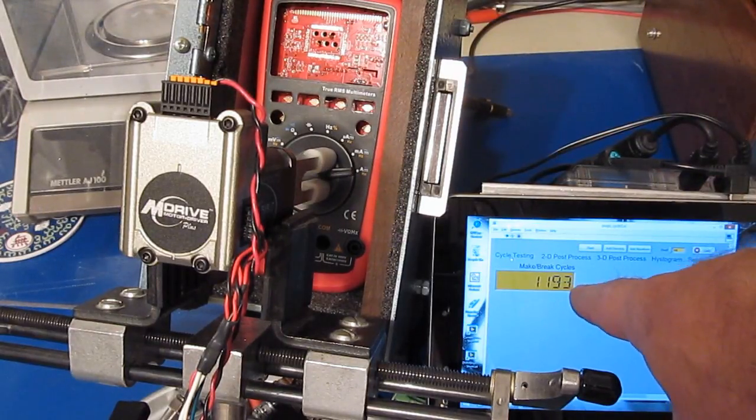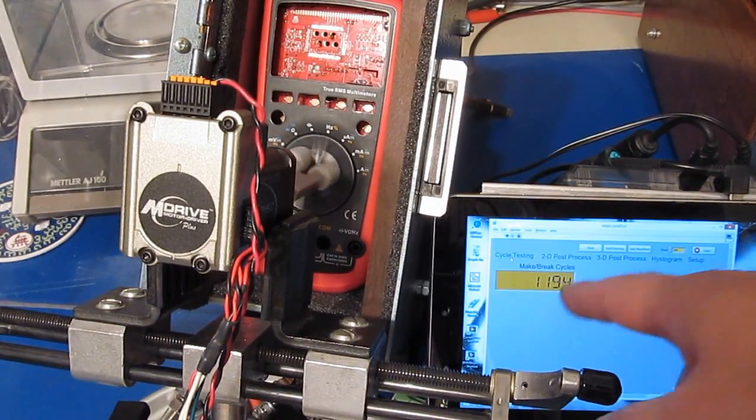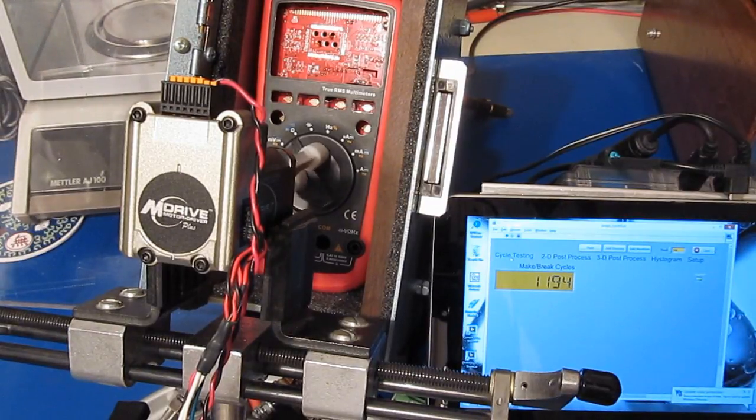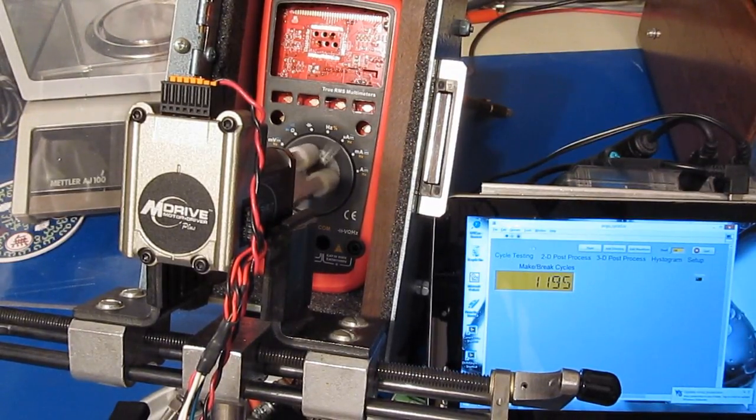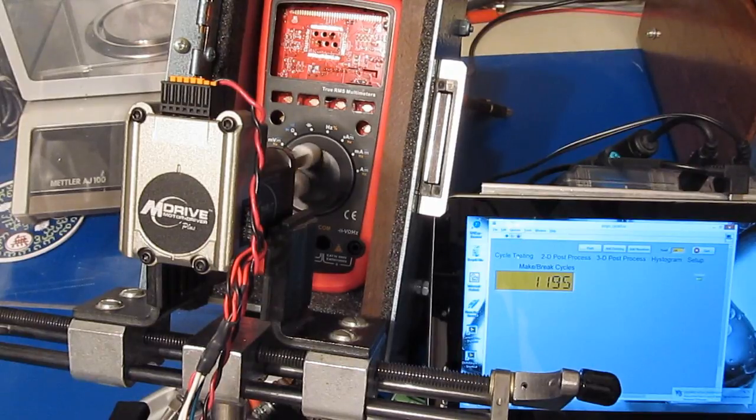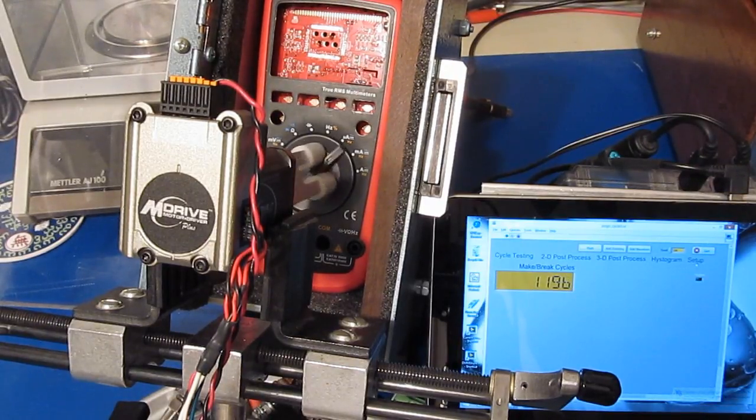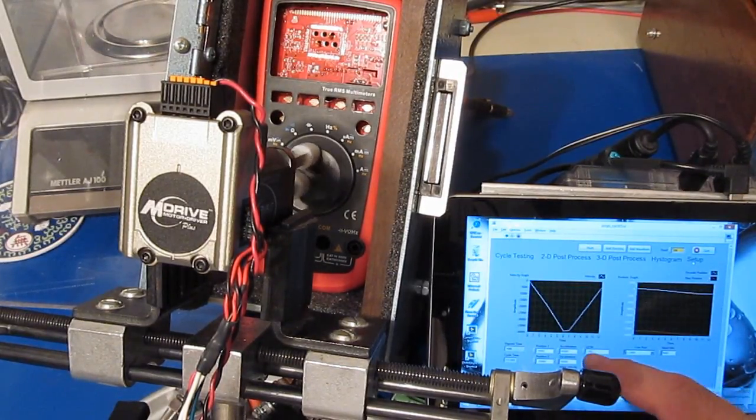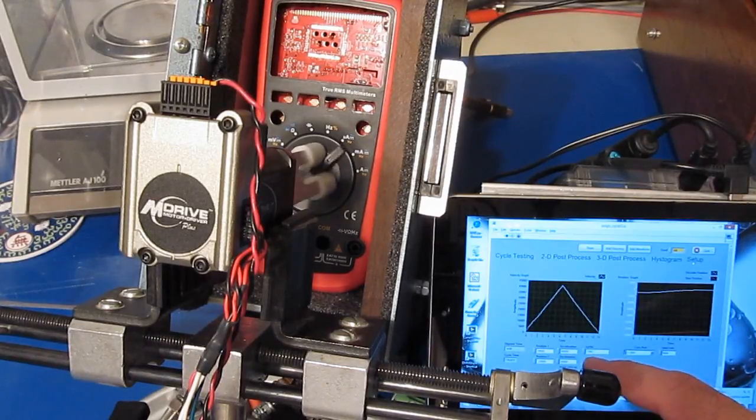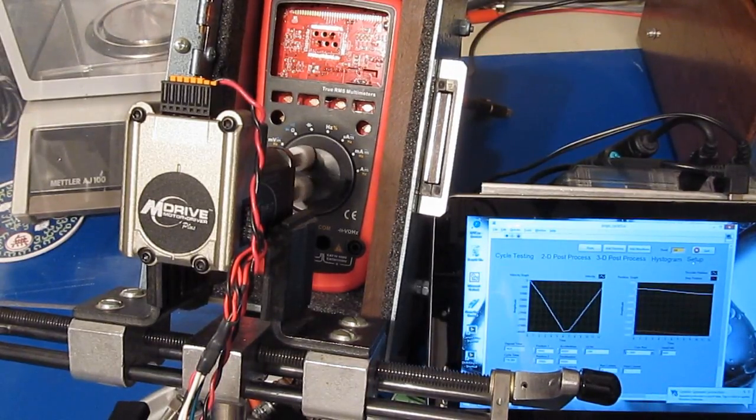As soon as it hits the off, it'll increment the counter. So this is actually half as much as what we're actually counting with this other counter. So you can see right now we're at 2,396 cycles.